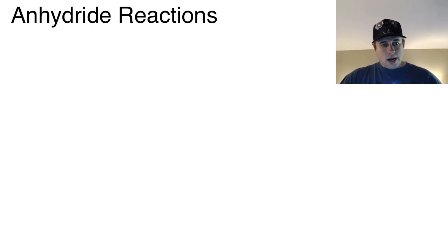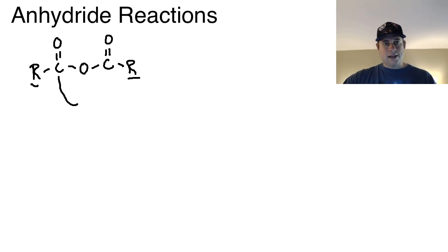So an anhydride in general is going to have the following form: it's got R-C double bond O with another O group, and then C double bond O with an R group. Now I will mention one of the things that's very common with anhydrides is for these two R groups to be the same, and that's because as you run these through reactions the carbonyl is what's going to technically be attacked during these reactions.